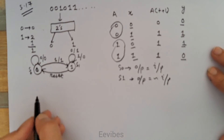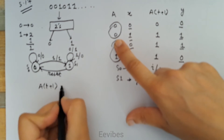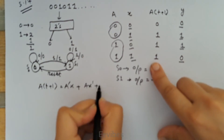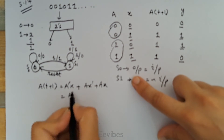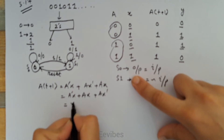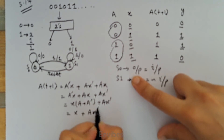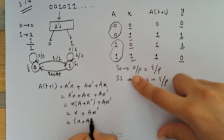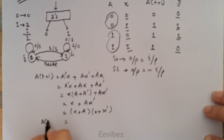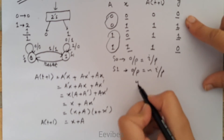The next step is to determine the output equations. A(t+1) is equal to one for the input combinations A'X + AX' + AX. Simplifying: take X common from A'X and AX to get X(A' + A) plus AX', which becomes X + AX'. This simplifies further to X + A, since X + AX' = X + A. So A(t+1) comes out to be simply X + A.